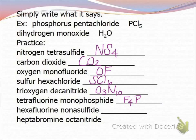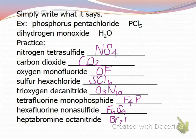Hexafluorine sulfide and heptabromine octanitride — try those for a second. If you did that correctly you should have had F6S and then heptabromine would be Br7, octanitride would be N8. Now many of these compounds don't actually exist — I'm literally putting them on there so you can practice with the prefix systems.